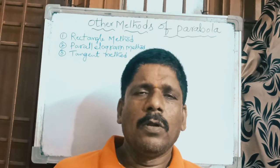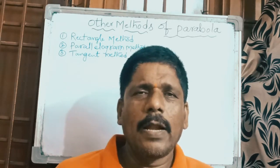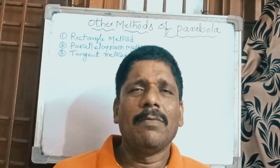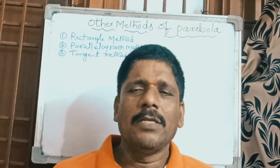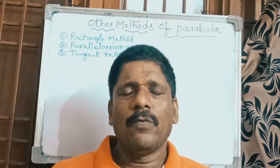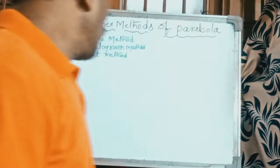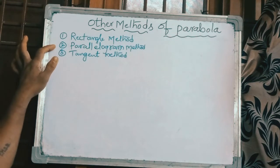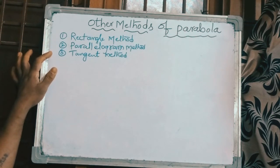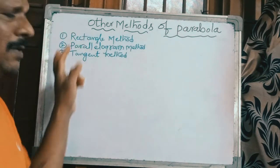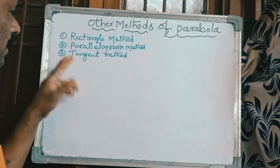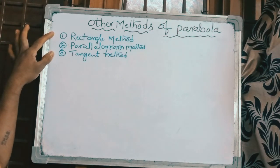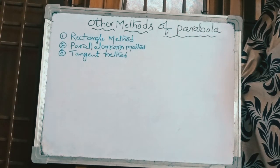Good morning friends. In the last video we discussed the eccentricity method for parabola, ellipse, and hyperbola. Today we go for different other methods of parabola. There are three types: rectangle method, parallelogram method, and tangent method. These three methods are very important and as per the J2 curriculum, questions are asked on these three methods only.